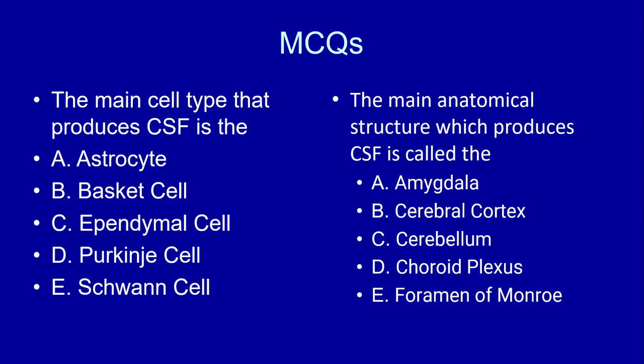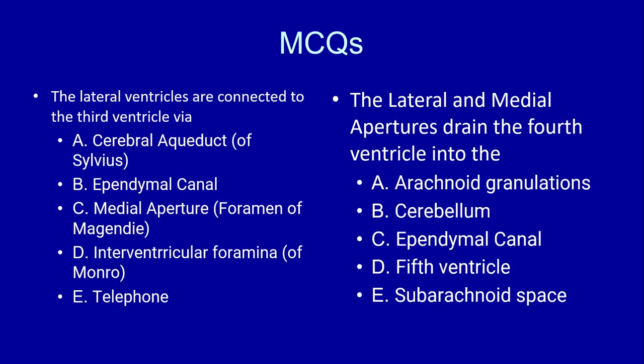MCQs: as mentioned, the assessment system has changed to MCQ format. The first MCQ asks: what is the main cell type that produces CSF? The second asks: what is the main anatomical structure that produces CSF? The third: the lateral ventricles are connected to the third ventricle via which structure? The fourth: the lateral and medial apertures drain the fourth ventricle into which space? Please choose one option for each and write your answers in the comment box. Thank you, see you in the next lecture.